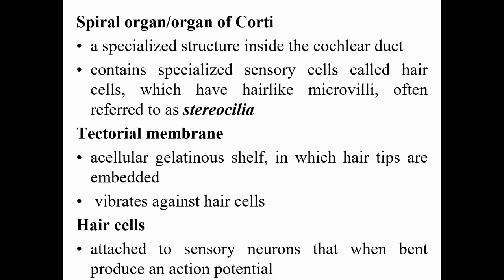The spiral organ, or organ of Corti, is a specialized structure inside the cochlear duct. It contains specialized sensory cells called hair cells, which have hair-like microvilli called stereocilia. The tectorial membrane is a gelatinous shelf in which hair tips are embedded; it vibrates against hair cells. The hair cells are attached to sensory neurons that, when bent, produce an action potential.